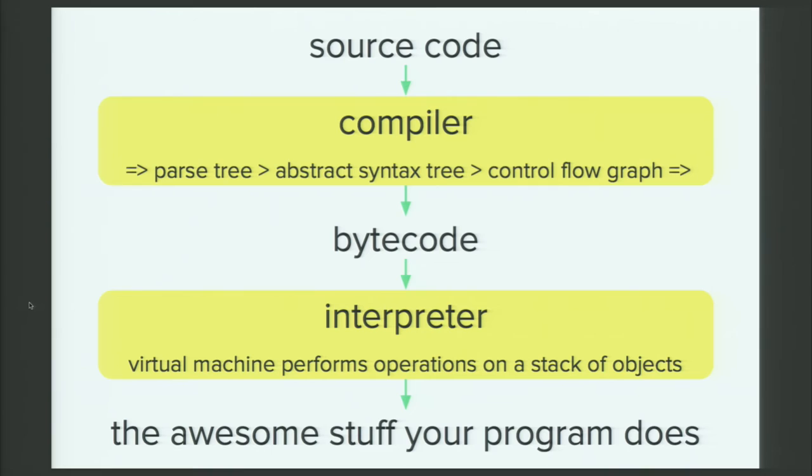And that gets compiled by part of CPython that's called a compiler. It gets turned into a parse tree, an abstract syntax tree, a control flow graph. What those are doesn't really matter for our purposes right now, they're all just different abstractions of what we want our code to do. The important part is that ultimately gets compiled down to bytecode, which obviously we'll be talking a bit more about in a moment. And that bytecode, whatever it is for now, gets passed to the interpreter and is what the interpreter actually runs. The interpreter being a virtual machine that is performing operations on a stack of objects. So the interpreter executes that bytecode, and then you get out whatever awesome stuff your Python program is designed to do. Great!